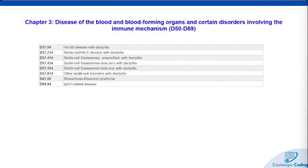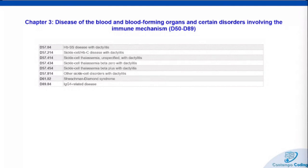The severity of sickle cell thalassemia can vary depending on the type. Beta zero is where no normal hemoglobin is produced and the condition is more severe. If it's beta plus, there is some normal hemoglobin produced and the symptoms might be milder. We also have Shwachman-Diamond syndrome, a rare genetic disorder affecting the bone marrow, pancreas, and skeleton — it leads to a weakened immune system, issues with pancreatic enzymes, and often skeletal abnormalities like short stature. And then we have IgG4-related disease, a complex immune-mediated condition characterized by tissue inflammation and elevated levels of IgG4 antibodies that can target almost any organ — pancreas, liver, kidneys, lungs — with symptoms including swelling, nodules, and organ dysfunction.